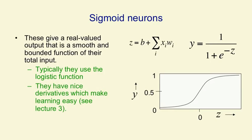When the total input's 0, e to the minus 0 is 1, so the output is half. And the nice thing about a sigmoid is it has smooth derivatives. The derivatives change continuously, and so they're nicely behaved, and they make it easy to do learning, as we'll see in lecture 3.